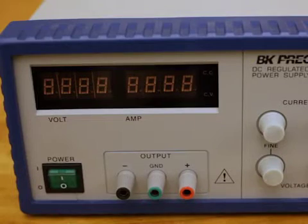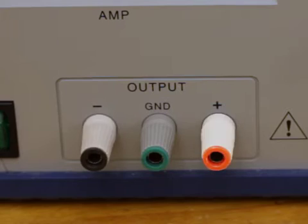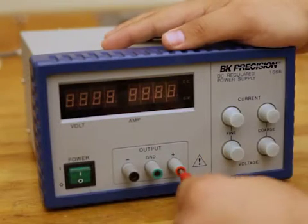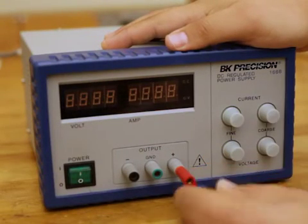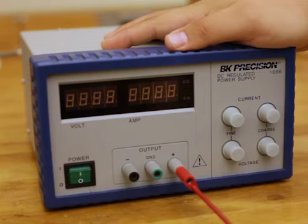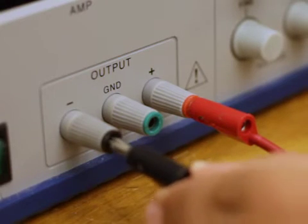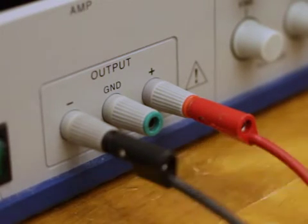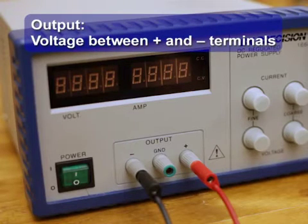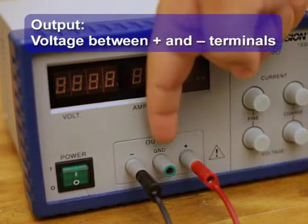Most single-output DC power supplies have three terminals: plus, minus, and ground. The plus terminal is connected to the higher voltage input of downstream equipment. The minus terminal is connected to the lower voltage input. The output is the voltage or current between the plus and minus terminals, which are electrically isolated from the ground. The ground terminal is a fixed earth-ground reference that is 0 volts.